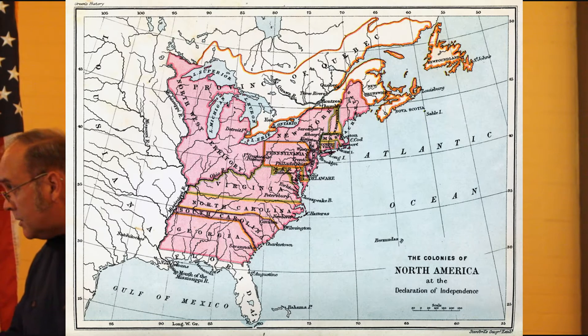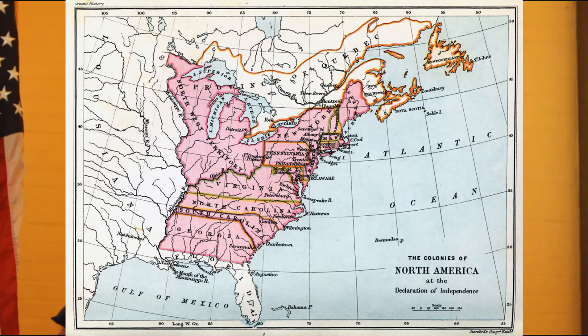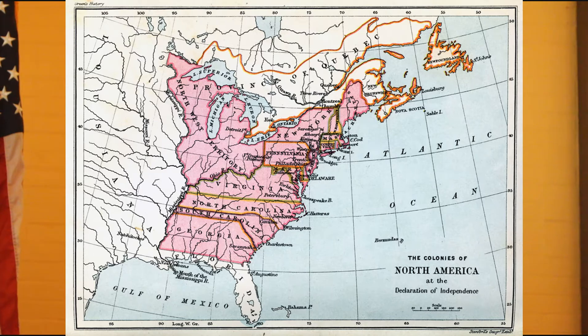Virginia was claiming everything out to the Mississippi River. In order to be a member of the confederation, states had to forego their claims to western boundaries to appease the small states like Delaware and Maryland. And they did eventually do this when they ratified. Pennsylvania had claims, North and South Carolina had claims—everybody was claiming lands out to the west.